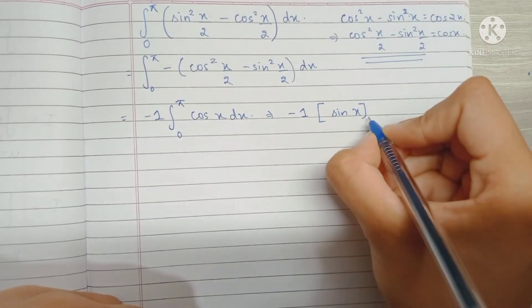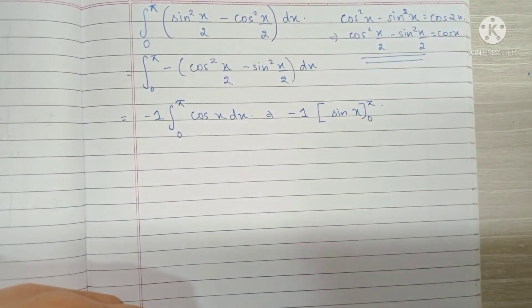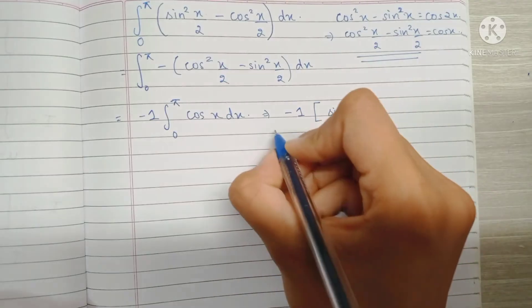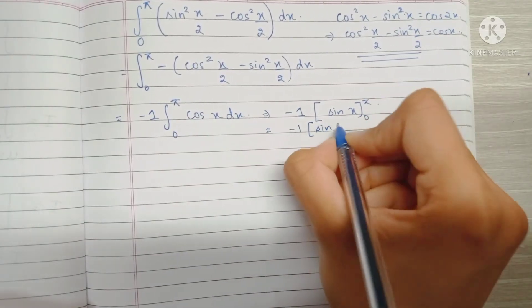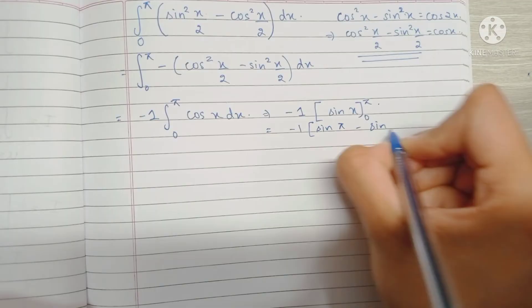So we do this by placing sine pi minus sine 0.